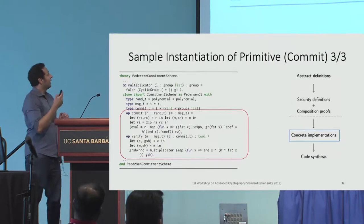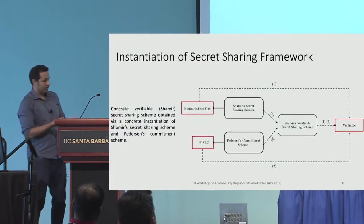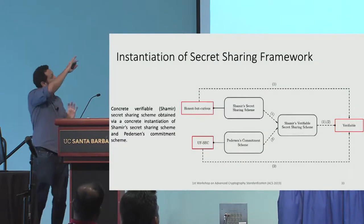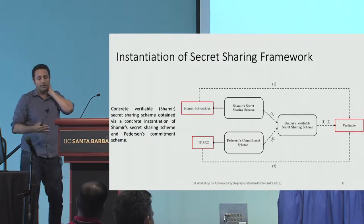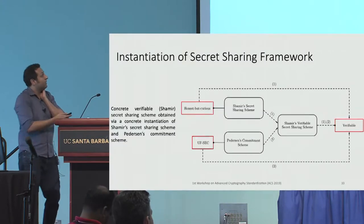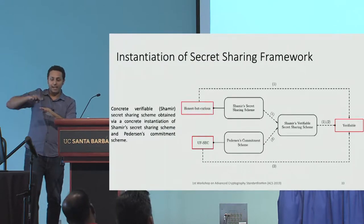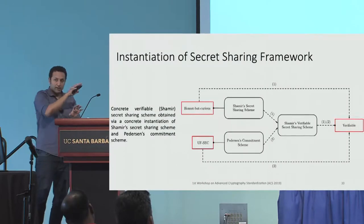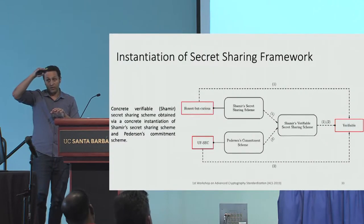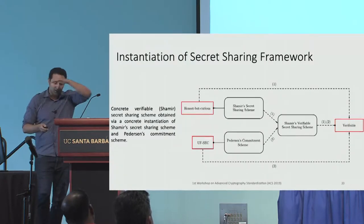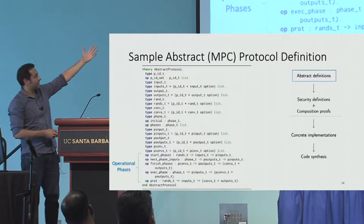We also have commitment schemes — Pedersen and Feldman. At the abstract level we prove that if you combine a primitive satisfying the honest-but-curious definition — where shares are independent of the secret — with a commitment scheme, you get verifiable secret sharing. This is proven at the abstract level, so this framework means that any time you instantiate any of these primitives using a concrete mathematical structure, that protocol will inherit the composition proofs done at the abstract level. You prove these compositions once. This is composition in series, not UC composition.